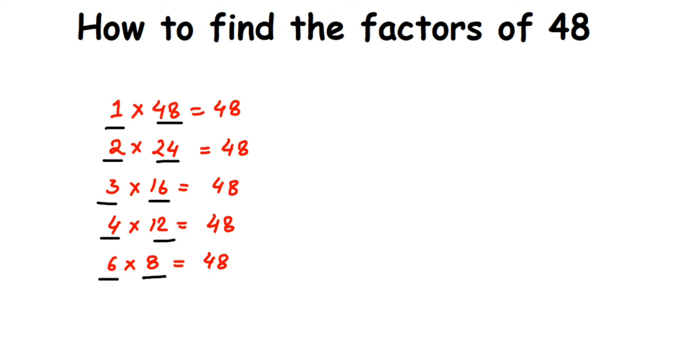So we're going to conclude the answer. Therefore, factors of 48 are 1, 2, 3, 4, 6, 8, 12, 16, 24, and 48. So I hope this is clear how we have done. In case you have any questions or doubts you can drop a comment below. Thank you so much for watching.